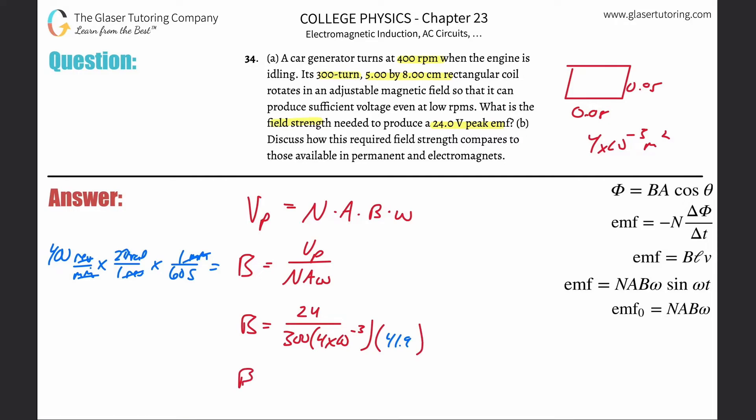Now let's put it into the calculator. It's going to be 24 divided by parentheses 300 times 4 times 10 to the minus 3 multiplied by that answer, and what do we get? 0.477 Tesla. And there you go. That's the magnetic field strength.